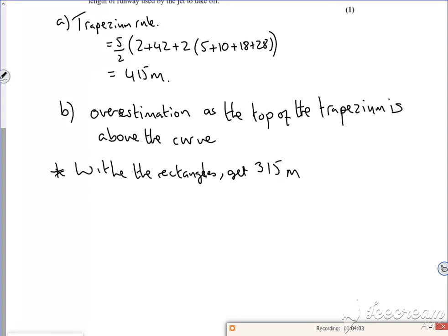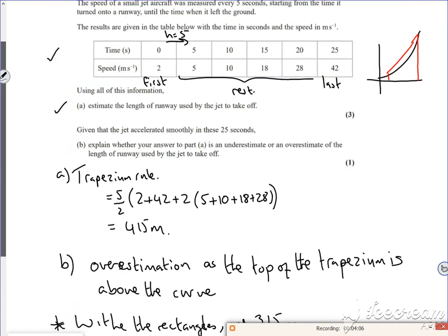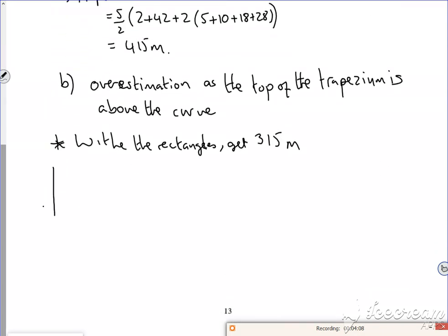So with the rectangles, you get 315. But in this case, for the graph this time, if I use a rectangle, it's an underestimation. This is an underestimation.